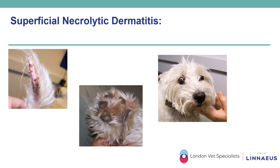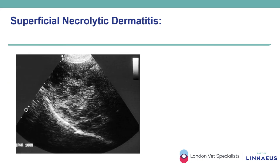This is an example of superficial necrolithic dermatitis in a nine-year-old female neutered West Highland White Terrier, characterized by crusting and scaling affecting often the mucocutaneous junctions of the mouth and periocular skin. Other areas involved often include the footpads, where hyperkeratosis and fissures can be noted, and in this case the tail was also involved with crusting. This condition accompanies the presence of hepatic disease or, more regularly, a glucagonoma. In this patient, ultrasonographic examination of the abdominal organs detected a honeycomb appearance of the liver, indicating the presence of a hepatopathy.